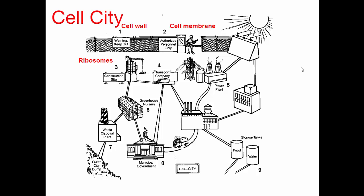How about the transport company? Notice the roads are only going within this city — that would be the ER, because the ER is a series of membranes that transports things within the cell. But what if this road were only leading out of the city? Then it would be the Golgi bodies. The Golgi bodies packages things up and sends them out of the cell.